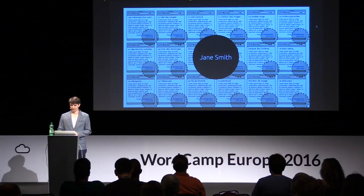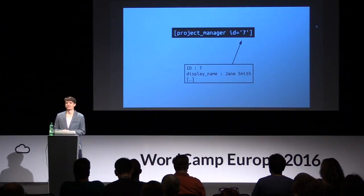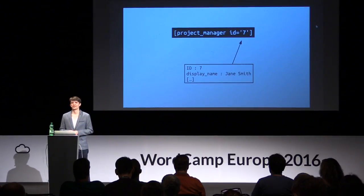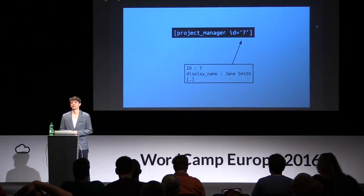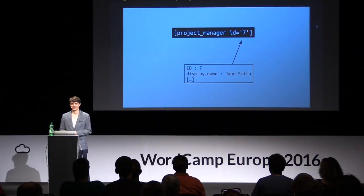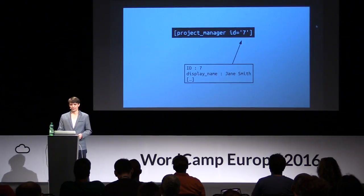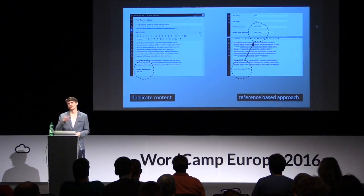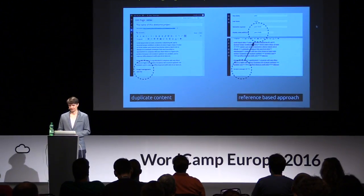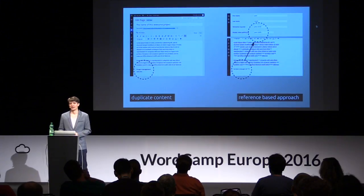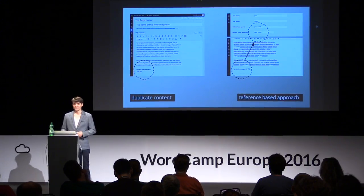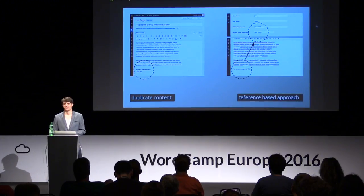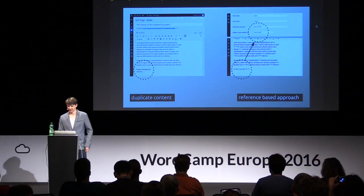So how can we do that with WordPress? For a very simple example, I'm just going to reuse WordPress users and create a very basic shortcode that does nothing else than, when you give it the ID of a user, it outputs the name of the WordPress user it refers to. And if we now replace the names with those shortcodes, we're going from duplicate content spread all over our website to a reference-based approach. Now we only change the name once, and it gets updated everywhere. This saves us a lot of time and therefore improves the maintainability of our website enormously.